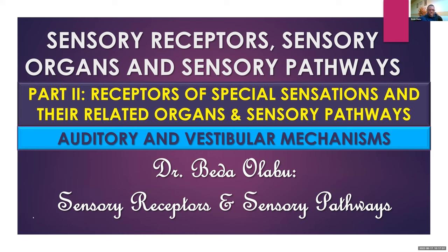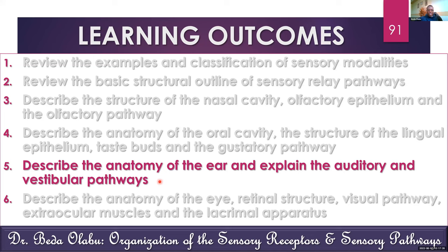We are going to look at the second part of the lectures on receptors of spatial sensations. We've seen the first part and looked at olfactory and taste sensations. In the second part, we are going to focus on auditory and vestibular sensations, which means we are going to look at the ear itself. Our key objective is to describe the anatomy of the ear — the outer ear, middle ear, and inner ear — and explain the pathways for auditory as well as vestibular mechanisms.